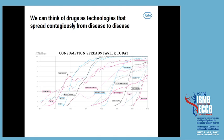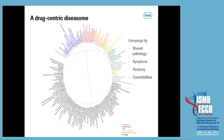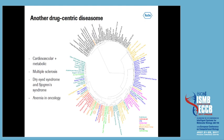We can think of drugs as technologies that spread contagiously from disease to disease. Successful drugs tend to spread across many more diseases in a kind of viral fashion. Looking at the static picture, we can create drug-centric disease classifications where certain similarities between diseases are highlighted because they share drugs that have been tested for them — due to shared pathology, symptoms, anatomical similarities, or comorbidities. For example, kidney diseases are grouped together in this clustering.